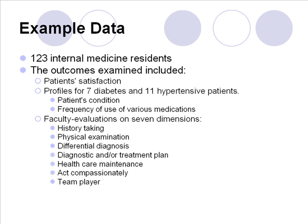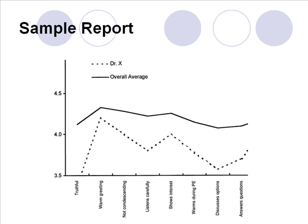Here is an example. 123 internal medicine residents at New York Presbyterian Hospital were examined. The outcomes examined included patient satisfaction, disease management profiles of an average of 7 diabetes and 11 hypertensive patients, including patient conditions and frequency of use of various medications, and faculty evaluations on 7 dimensions. Here is a sample report showing the overall average in the dark line and a dashed line showing one resident's data. This resident on various dimensions is doing less than the average, whether they are perceived to be truthful, warm in greeting, not condescending, listens carefully, or shows interest.